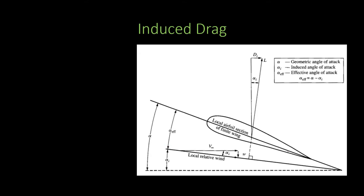From this diagram, let us assume that this is an airfoil whose chord is inclined at some angle alpha, where alpha is the geometric angle of attack. It is facing the freestream velocity V∞. Due to the downwash, the local flow over the airfoil gets disturbed and there is an induced angle of attack alpha_i, also known as the downwash angle. Although the freestream is coming in one direction, locally on the airfoil the flow will be in a different direction.